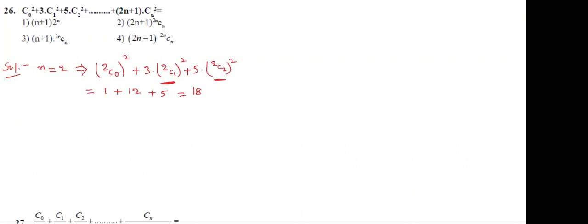Now verify the options. I am going to verify the first option: (2+1) into 2 squared. 2 squared means 4, 4 threes are 12. So this is the wrong answer, clearly.